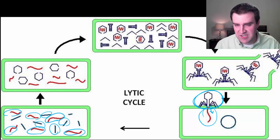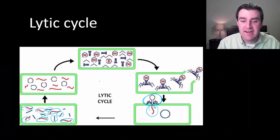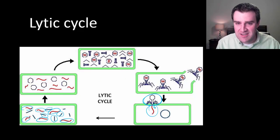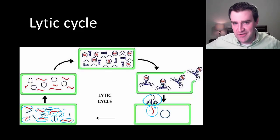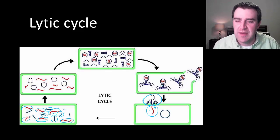So essentially, the lytic strategy is a very active strategy about telling the cell to make new viruses. And in the case of a poor little bacterial cell, it turns out so many viruses might be created that the cell literally blows up and dies and releases all those viruses to go on and infect other bacteria.